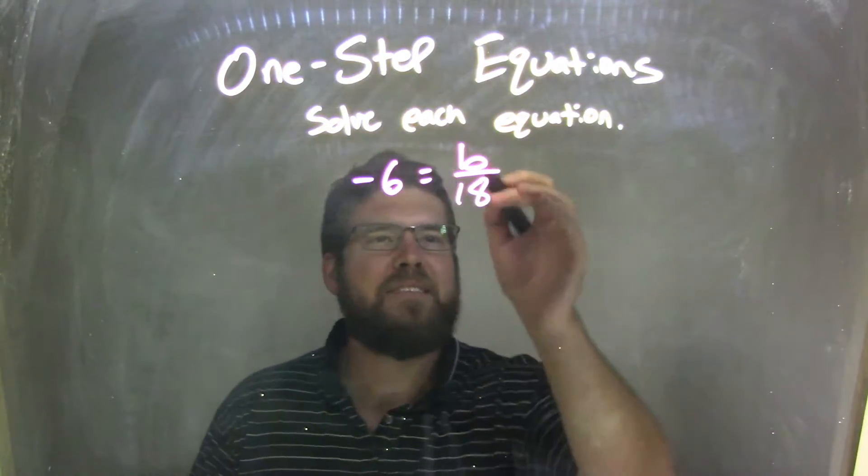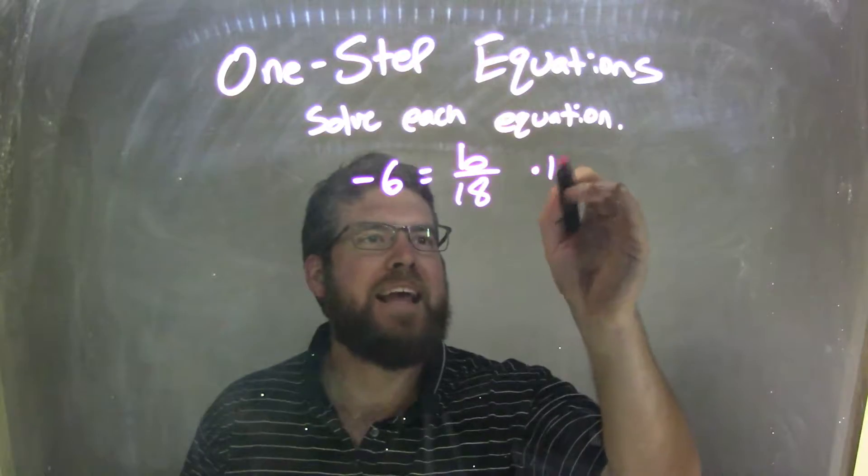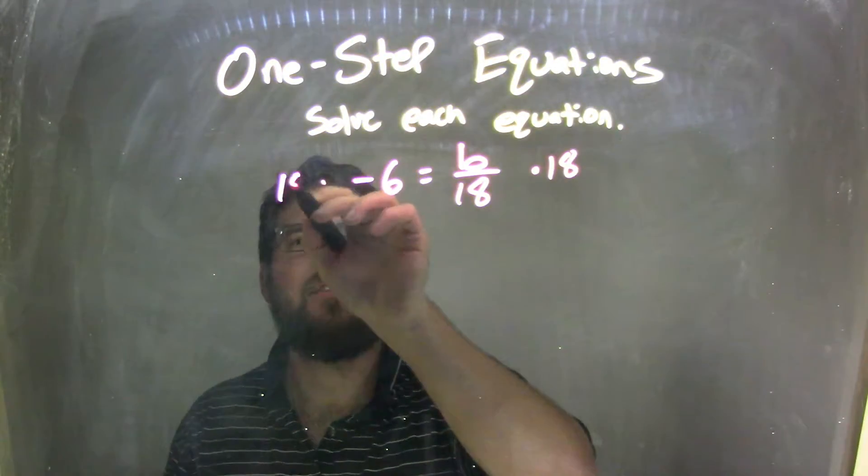Well, that's division here. So the opposite of division is multiplication. So I'm going to multiply 18 to both sides, multiply by 18.